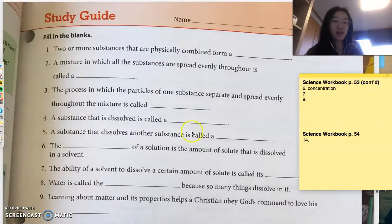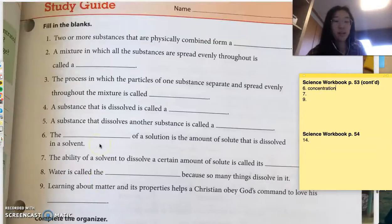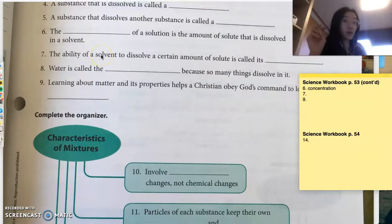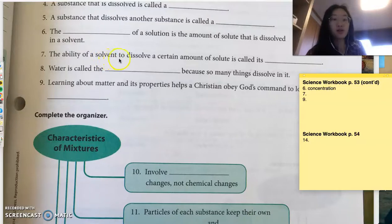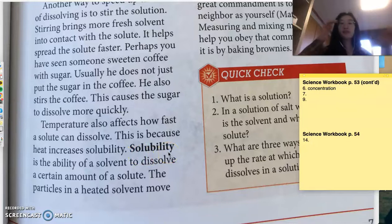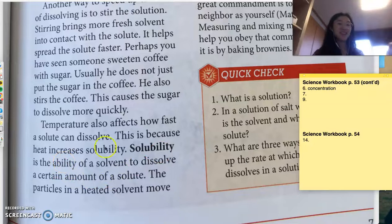Number 7. The ability of a solvent or the water, the ability of a solvent to dissolve a certain amount of solute is called its... Well, lucky for us, it's right here. Solubility. You probably noticed how solubility rhymes with the ability. Solubility, ability. Ability of a solvent to dissolve something. So, number 7 is solubility.